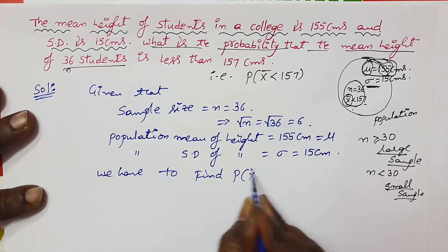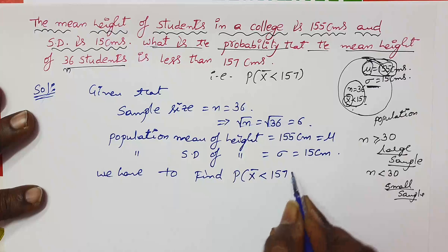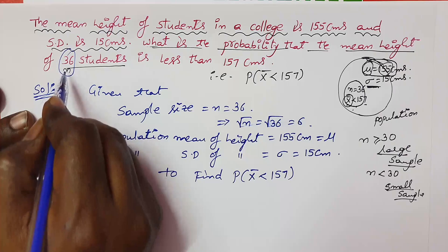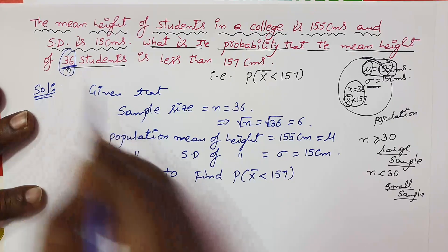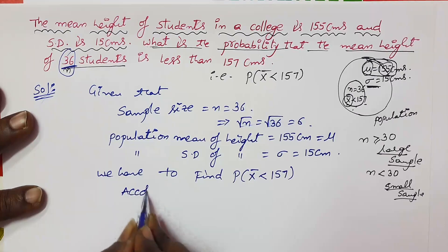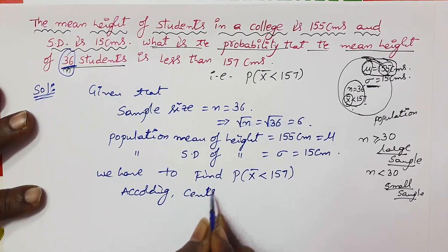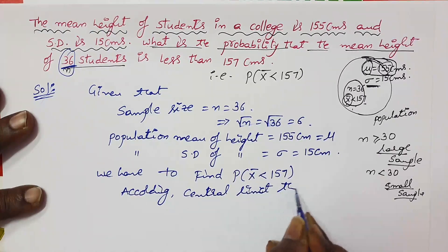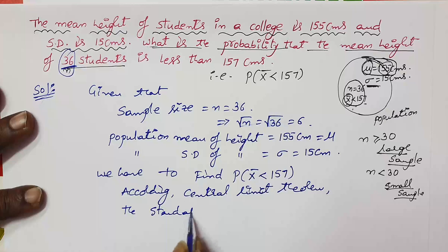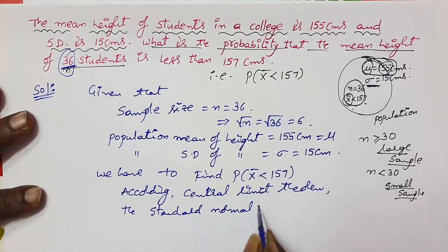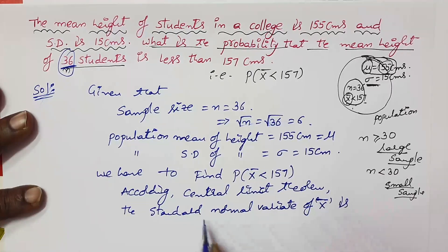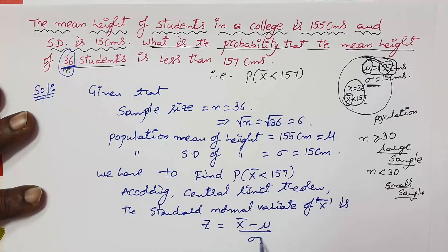We have to find the probability that sample mean x̄ is less than 157 centimeters if we take 36 students. According to the central limit theorem, the standard normal variate z is defined as z equals x̄ minus mu, divided by sigma divided by root n.